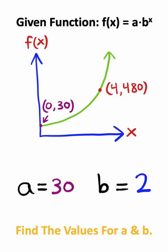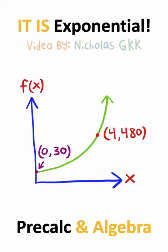So solving for a and b, we figured out that a is equal to 30 and b is equal to 2, meaning the function looks like this.